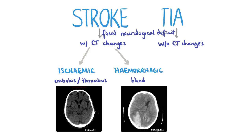One important cause of motor weakness is a transient ischemic attack or a stroke, which can affect different parts of the body depending on the area where the infarcted brain tissue is located. Check out my video on TIAs and strokes to learn more.